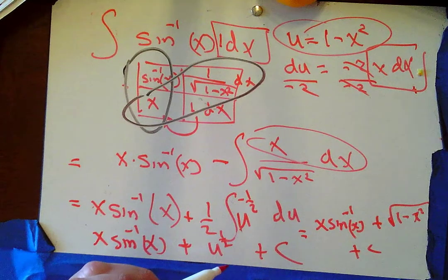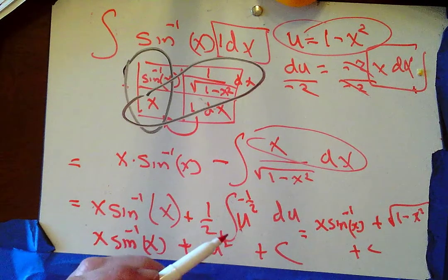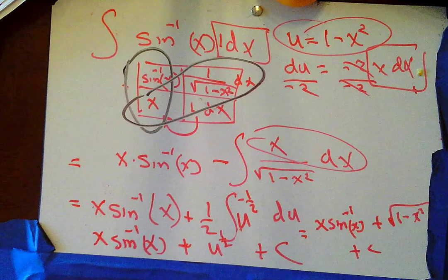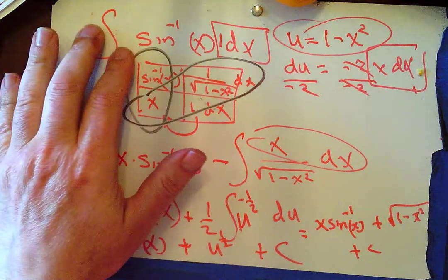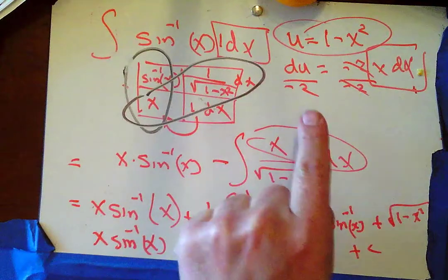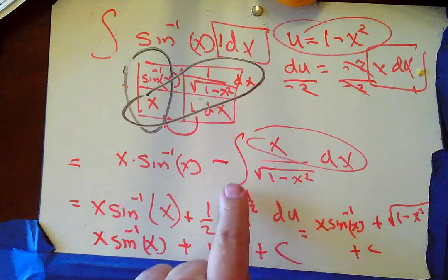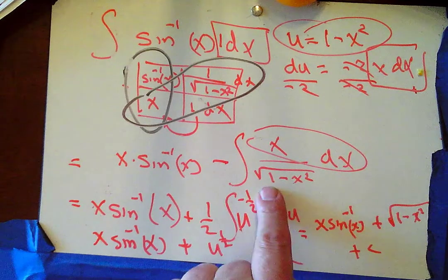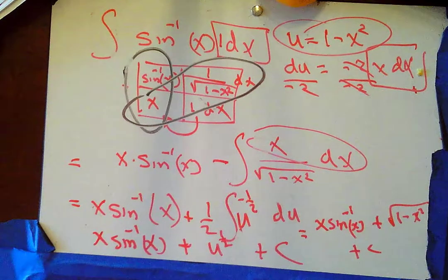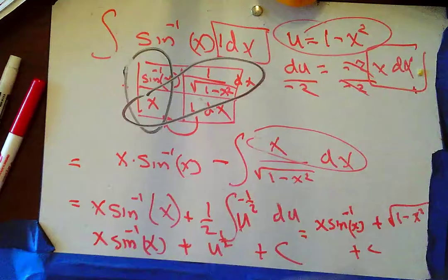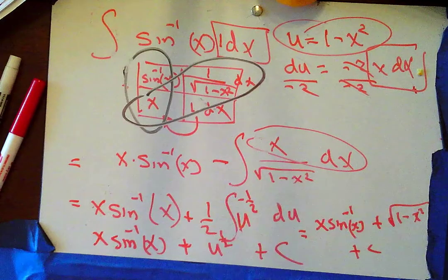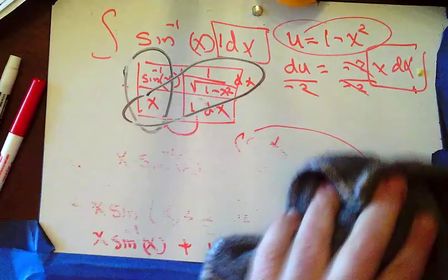You could leave it raised to the 1/2 power — that's not an issue. I want to point out two things: this was a by-parts problem to start. That brought me to another integral, and I looked at that and said that's not by parts — that's a u-sub, because I see a function and part of its derivative. Don't be surprised when a problem starts as by parts and then turns into something else.